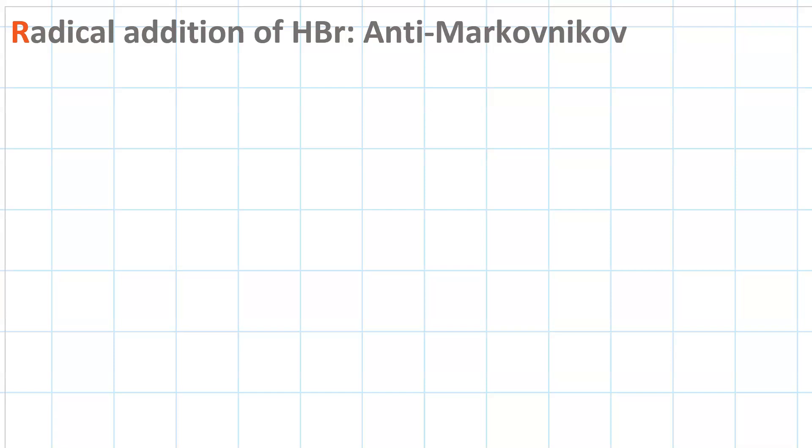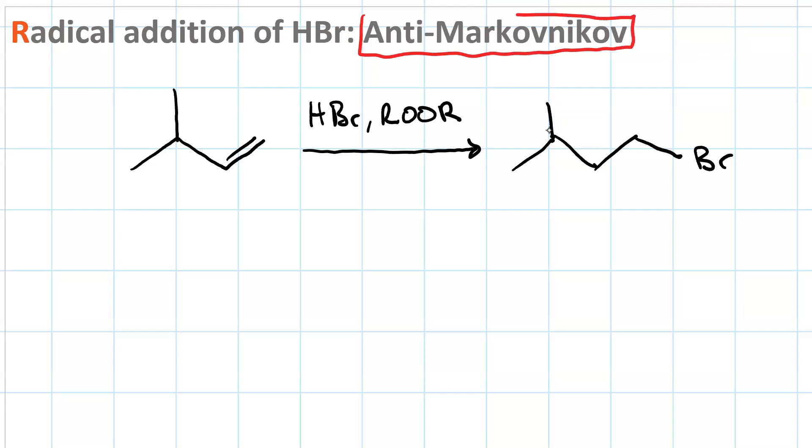Radical addition of HBr to an alkene gives you anti-Markovnikov regiochemistry. So if I take an asymmetric alkene, like 3-methyl-but-1-ene, and react it with HBr in the presence of peroxide R-O-O-R, I get 1-bromo-3-methyl-butane, which is anti-Markovnikov because the bromine was added to the less substituted of the sp2-hybridized carbons.